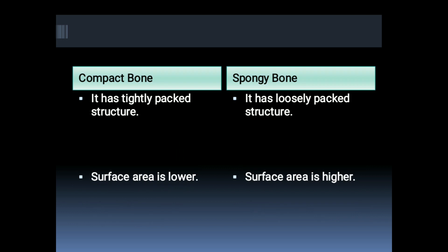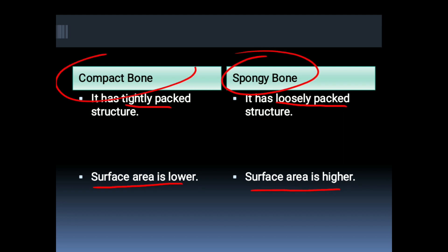Compact bone has a tightly packed structure while spongy bone has a loosely packed structure. The surface area of compact bone is lower, while the surface area is higher in spongy bone.